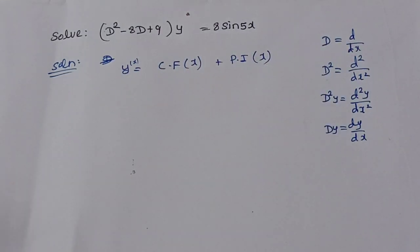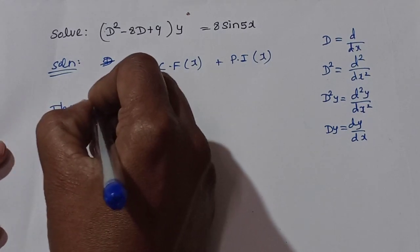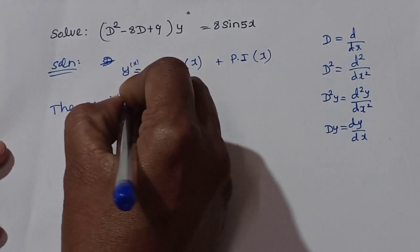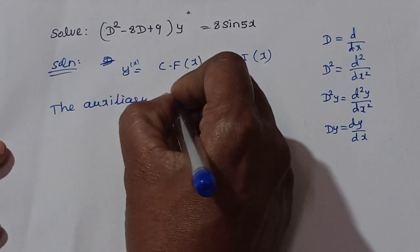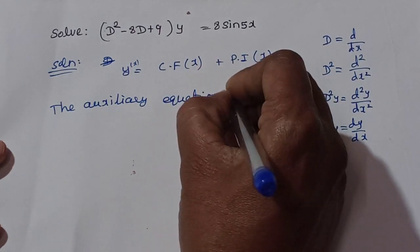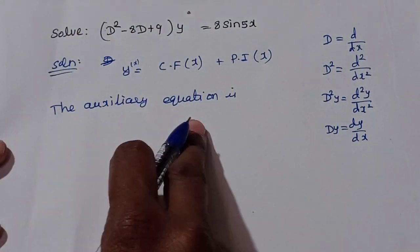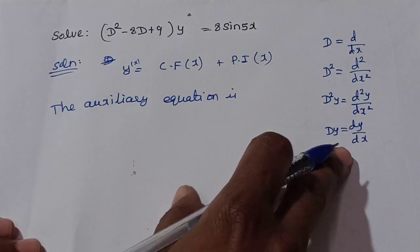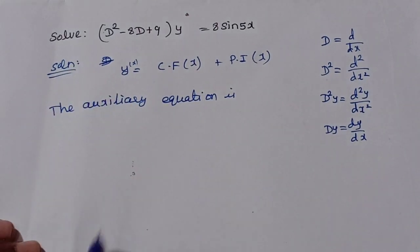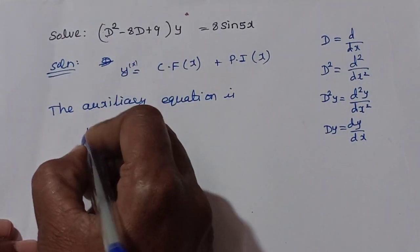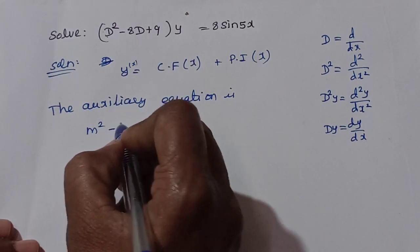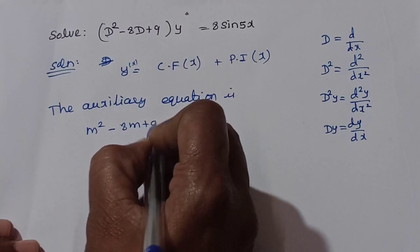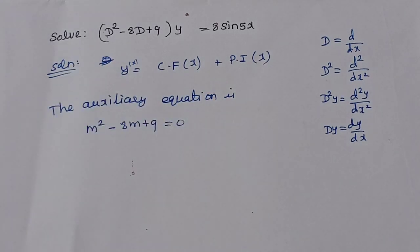To find the complementary function, we write the auxiliary equation. Replacing D with m, the auxiliary equation is m² minus 8m plus 9 equals 0.